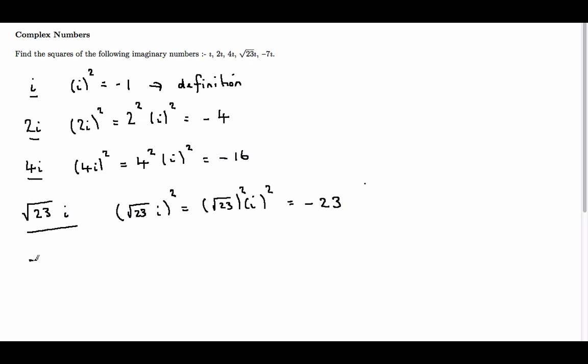Now, finally, we have minus 7i, so minus 7i squared. We have minus 7 squared, and we have i squared.